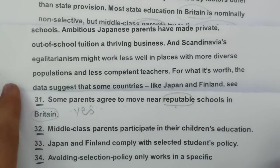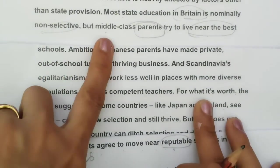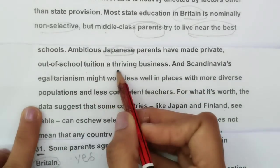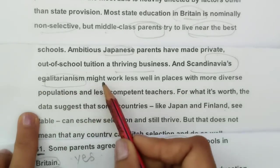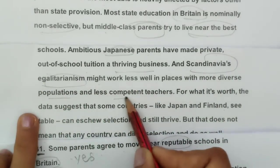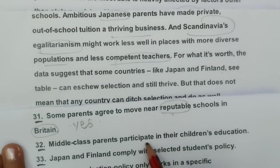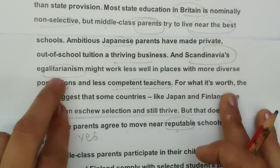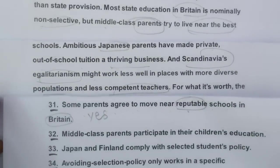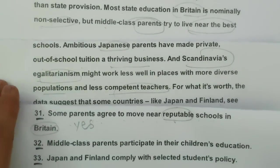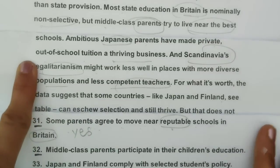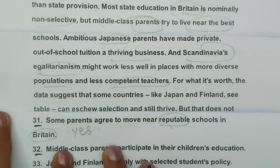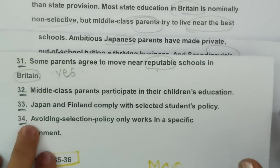Question 32: 'Middle-class parents participate in their children's education.' The passage mentions 'ambitious Japanese parents have made private out-of-school tuition a thriving business.' However, the passage is not clearly stating that middle-class parents participate in their children's education in the way the question implies. So the answer is NOT GIVEN.